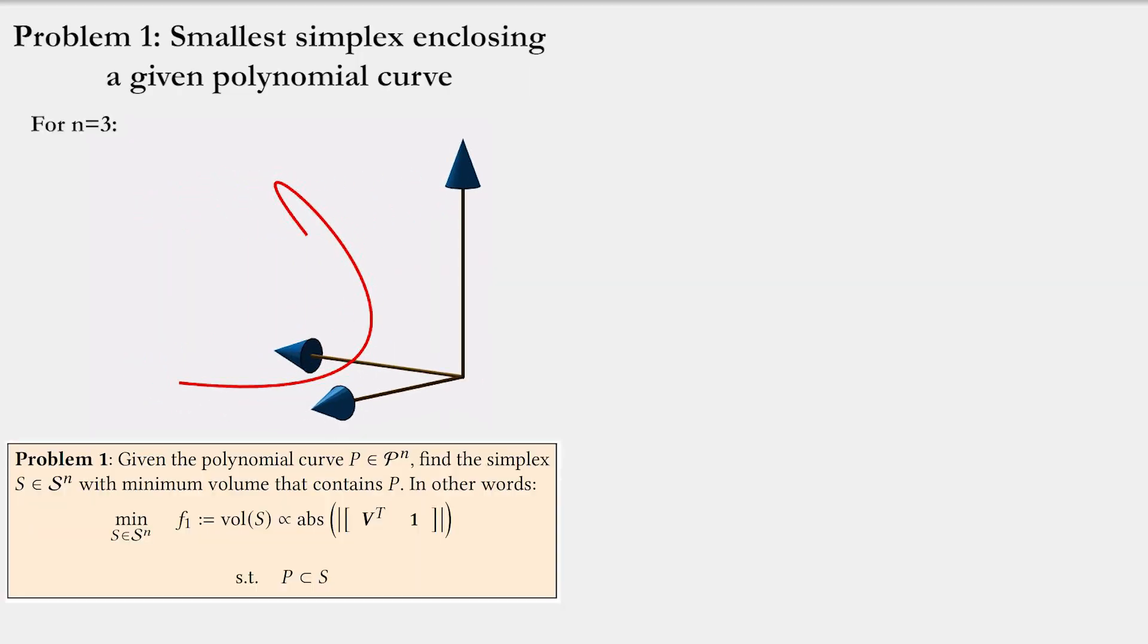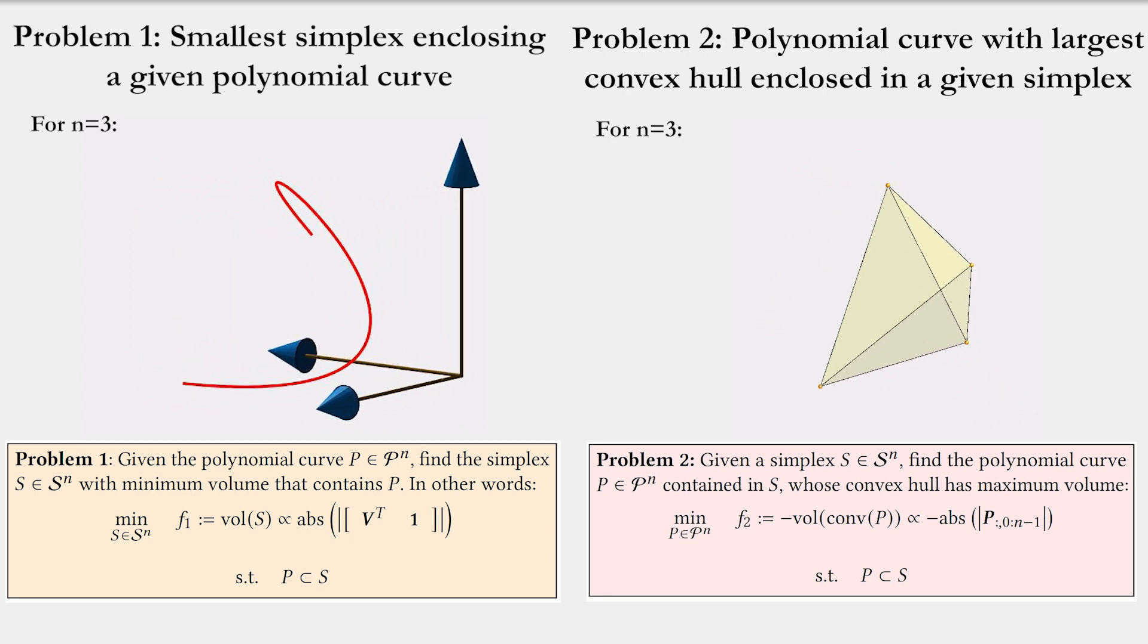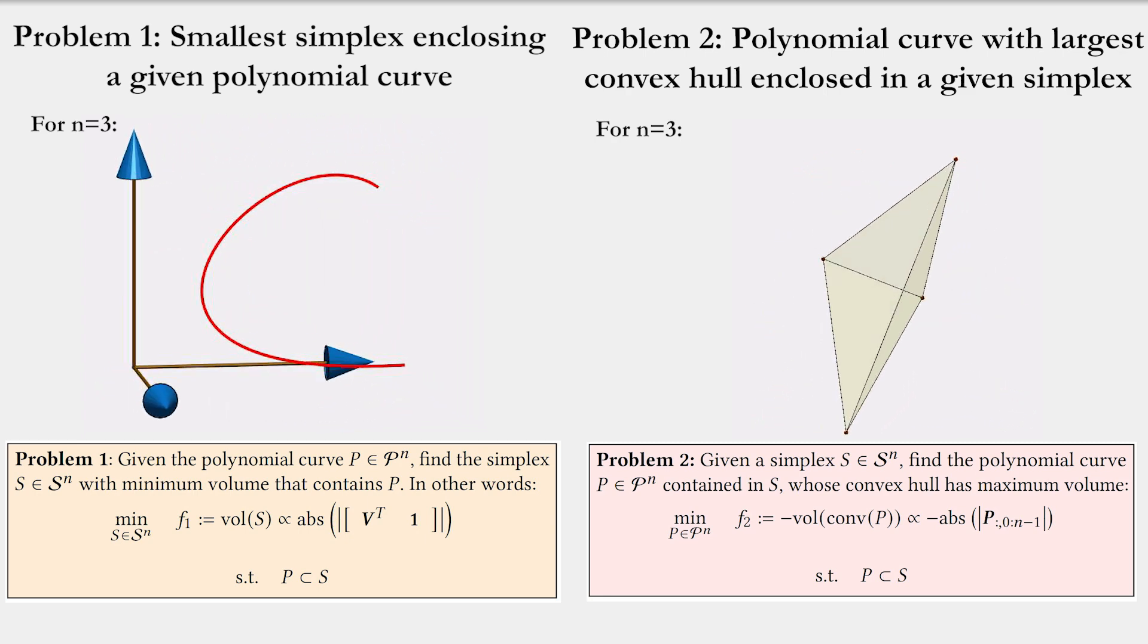In many of these applications, it is crucial to find the tightest simplex approximation of a given polynomial curve. We call this problem 1. Moreover, we are also interested in finding the curve with largest convex hull inside a given simplex, which we call problem 2.